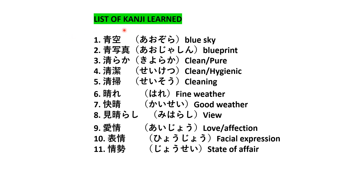Now this is the list of kanji we learned in this video: 1. Aozora — blue sky; 2. Ao jashin — blueprint; 3. Kiyoraka — clean or pure; 4. Seiketsu — clean or hygienic; 5. Seiso — cleaning; 6. Hare — fine weather; 7. Kaise — good weather; 8. Miharashi — view; 9. Aijo — love or affection; 10. Hyojo — facial expression; 11. Jose — state of affairs.